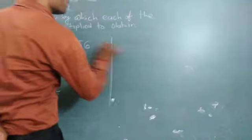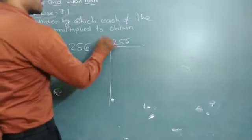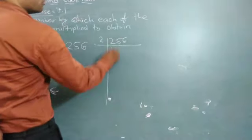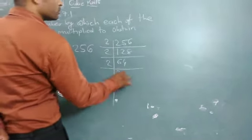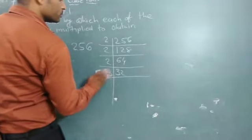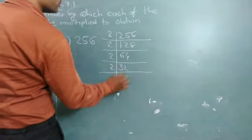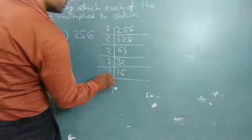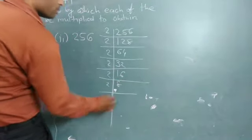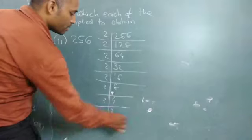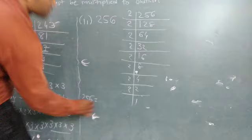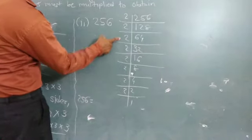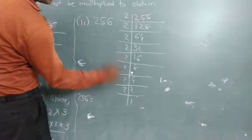Another example is 256. Start with 2. 2 times 128, 64, 32, 16, 8, 4, and 1. Now, 256 is equal to 2 multiplied 8 times.